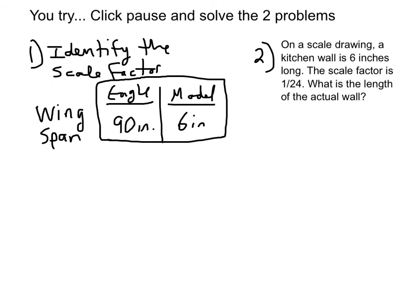Now you try. Click pause and solve these two problems. Number one: identify the scale factor. If an eagle's wingspan is 90 inches and the model is 6 inches, what's the scale factor? Number two: on a scale drawing, a kitchen wall is 6 inches long. The scale factor is 1 to 24. What is the length of the actual wall? Click pause, try both, then click play to see the solutions.